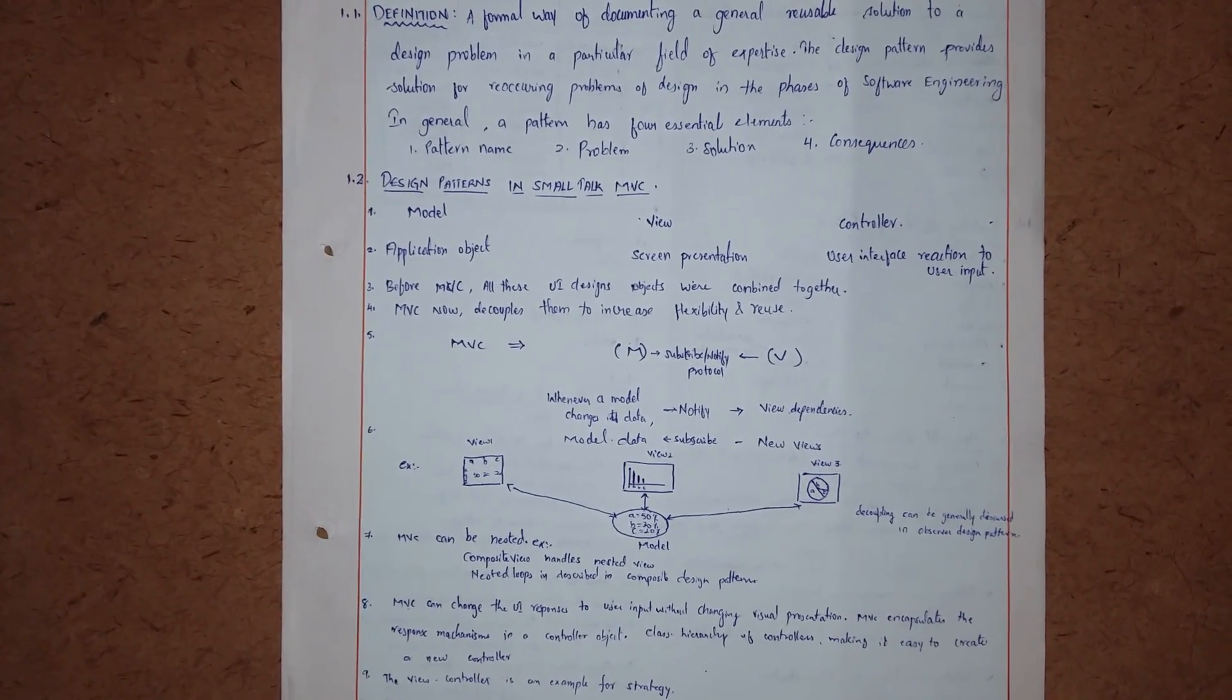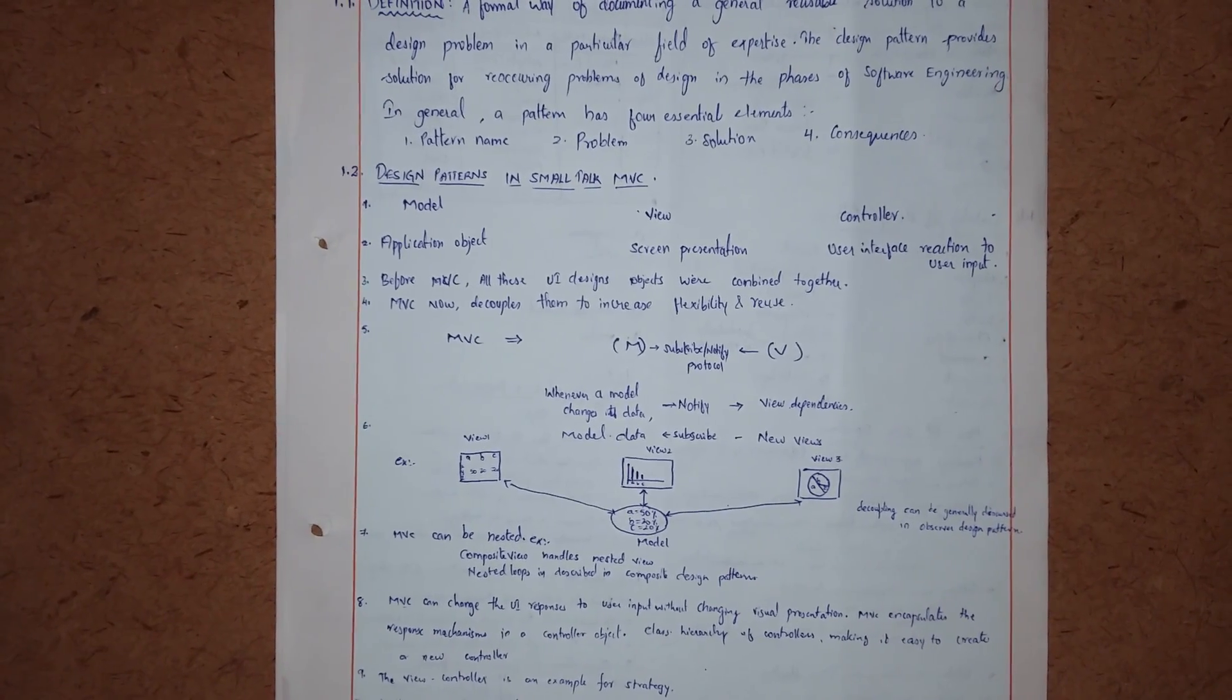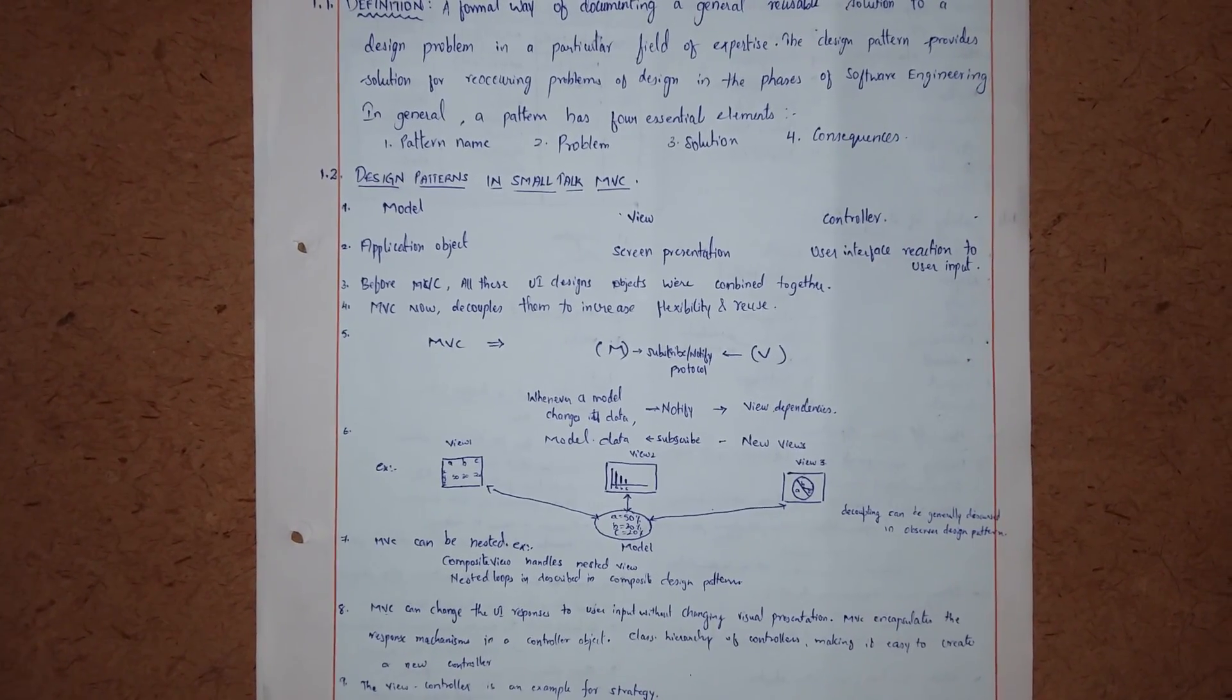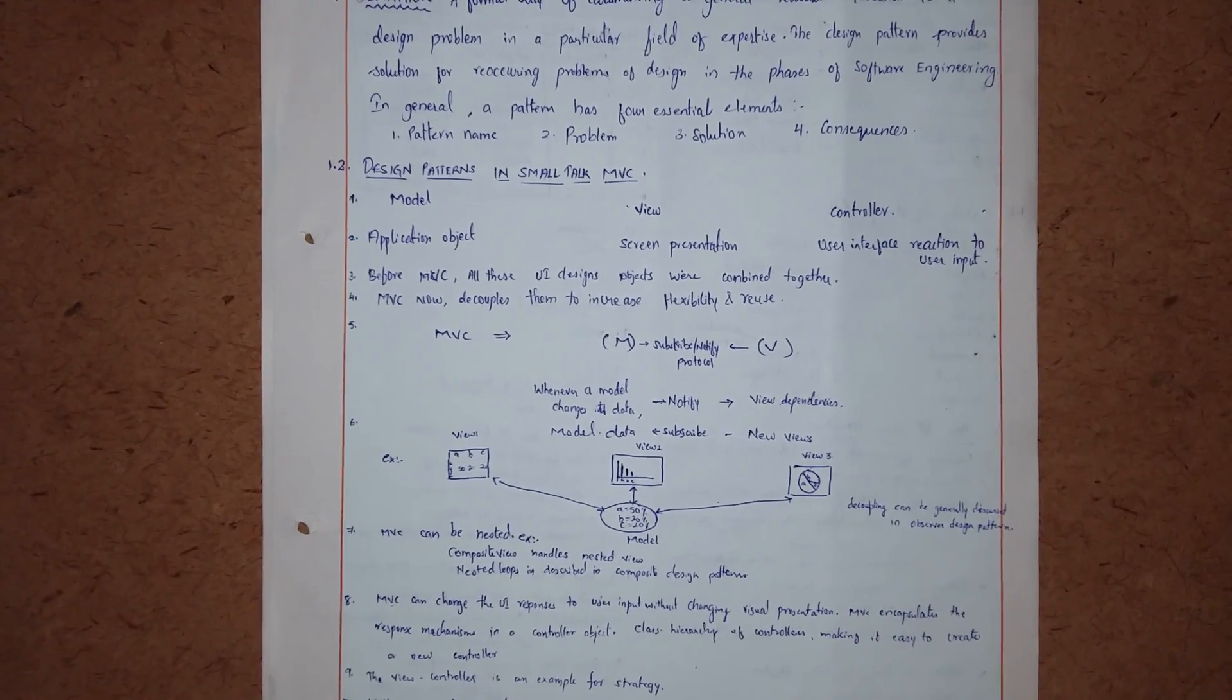The essential elements are pattern name, problem, solution, and consequences. The other part of the unit is design pattern in Smalltalk MVC.